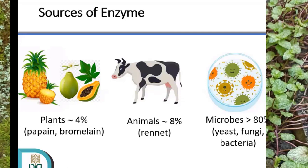Dari tanaman, jumlah enzim yang diproduksi sampai saat ini sekitar 4%. Kemudian dari hewan jumlahnya sekitar 8%, contoh yang sangat kita kenal adalah rennet untuk produksi keju. Ternyata lebih dari 80% enzim yang sudah diproduksi itu berasal dari mikroba.